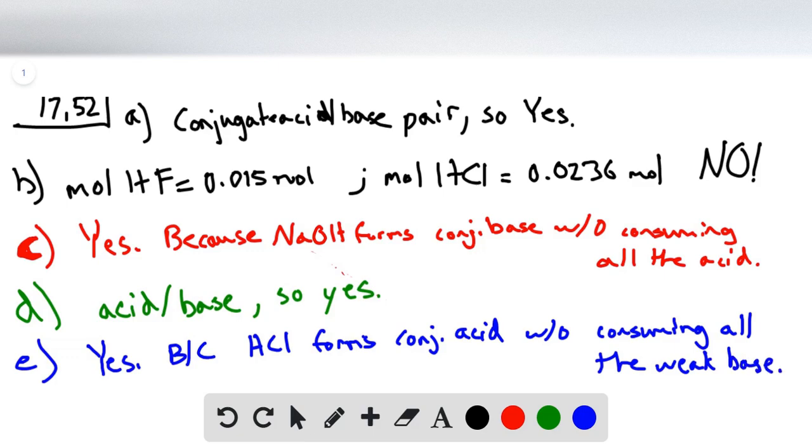So a buffer is formed if in any of these cases we can't obviously tell from the concentrations. For instance, if we have a lower volume but a higher concentration, we can always just multiply the two values to get the number of moles, as we did in part b here, to directly compare the numbers.